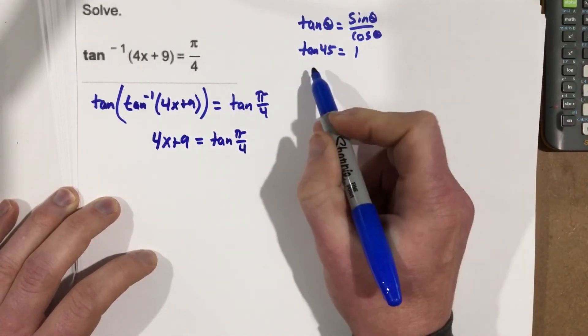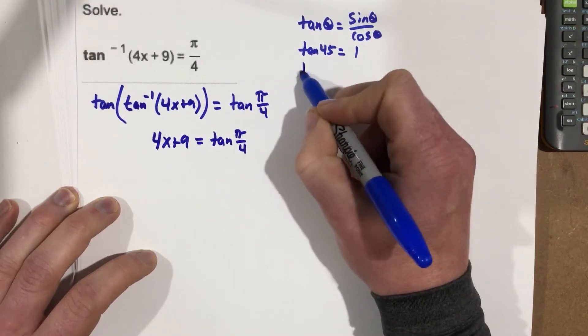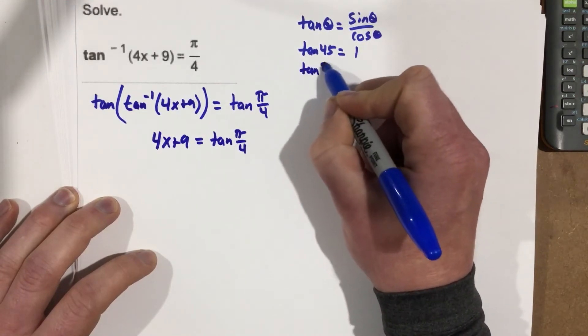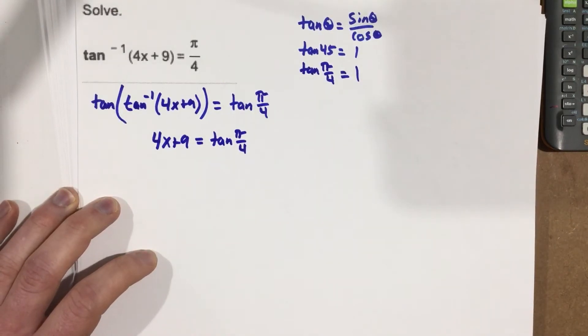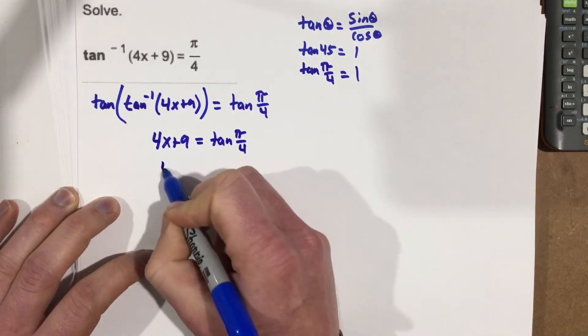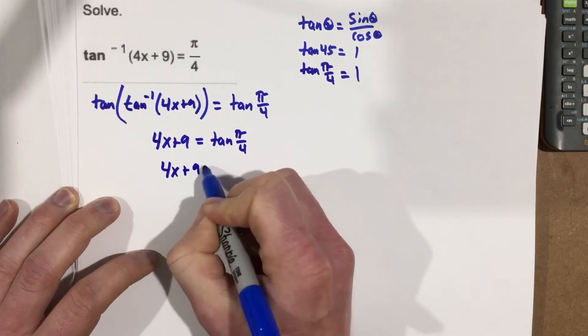But I know tan of pi over 4, that's the same as tan 45. So I know tan pi over 4 is also 1. So I can replace that with 4x plus 9 equals 1.